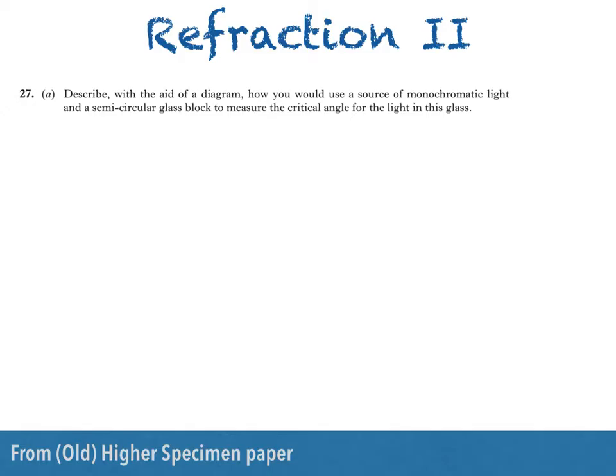Here's a question from the old Higher specimen paper. Part A asks us to describe with the aid of a diagram how you would use a source of monochromatic light and a semicircular glass block to measure the critical angle for the light in this glass.